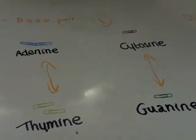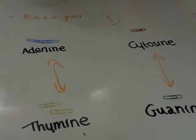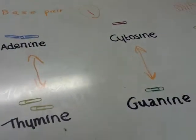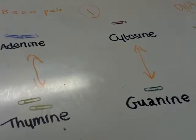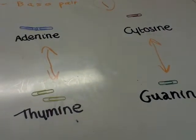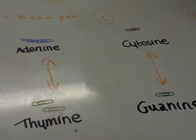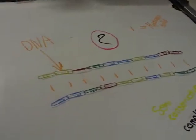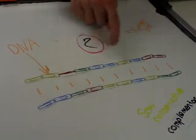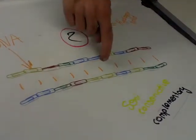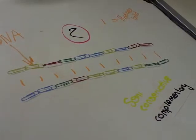There are four bases: adenine, thymine, guanine, and thymine. There are these strands which are complementary to each other, and these equal the hydrogen bonds.